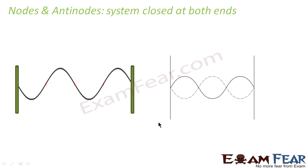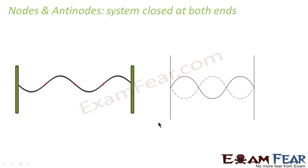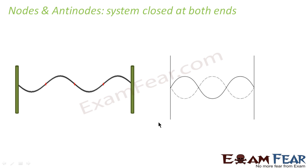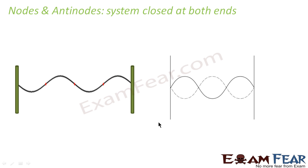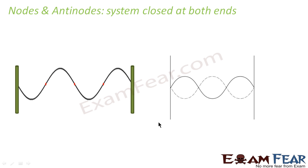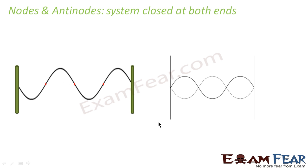Now we will talk about the position of nodes and antinodes in case of a system which is closed at both ends. When we say it is closed at both ends, that means both the ends are rigid boundaries. At both ends, nodes will be formed, because wherever you have a rigid boundary, no displacement can take place at that particular boundary. So at the boundary, amplitude is always equal to zero, and a node is formed at the closed boundary.